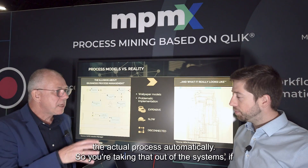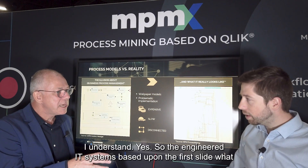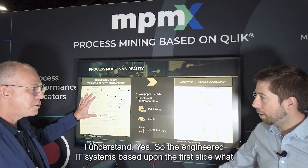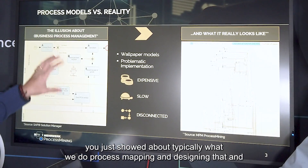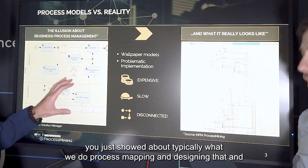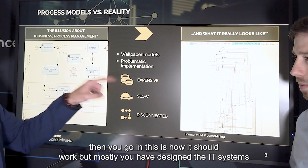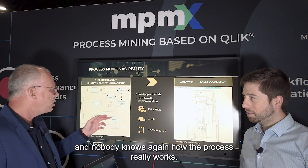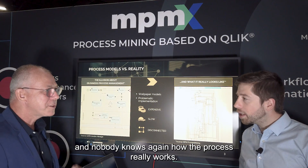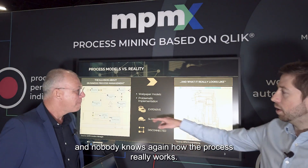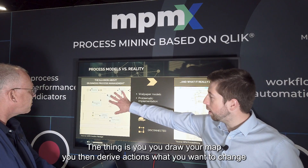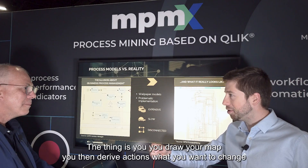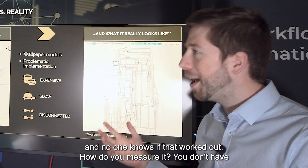So you're taking that out of the systems. IT systems were engineered based on process mapping and design - this is how it should work. But mostly you've designed the IT systems and nobody knows again how the process really works. You draw your map, you derive actions for what you want to change, and then no one knows if that worked out. How do you measure it?